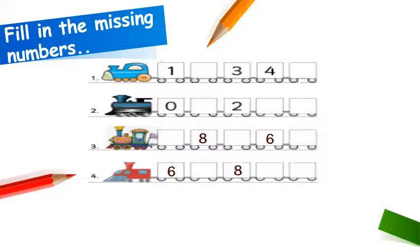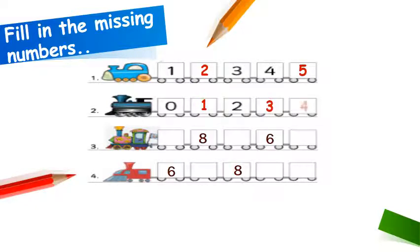Now kids, we will fill the missing numbers on the number train. In the first train, you see numbers one, three, and four. So think — will we count on or count back? We will count on this time. After one there is two, then three and four are written, then five. Now look at the next train. Zero and two are written. We will count on: after zero we write one, two is already written, then three and four.